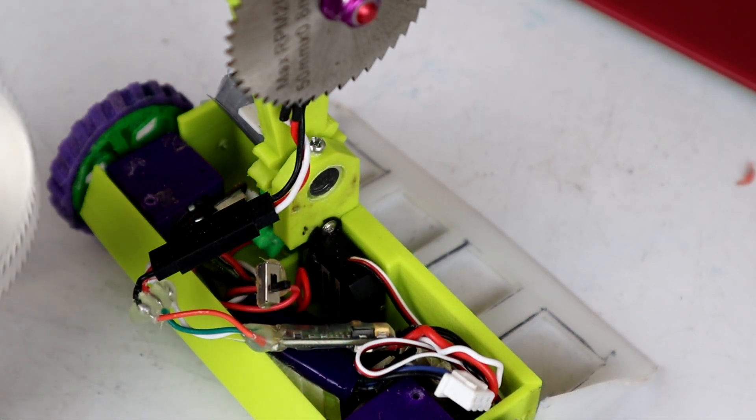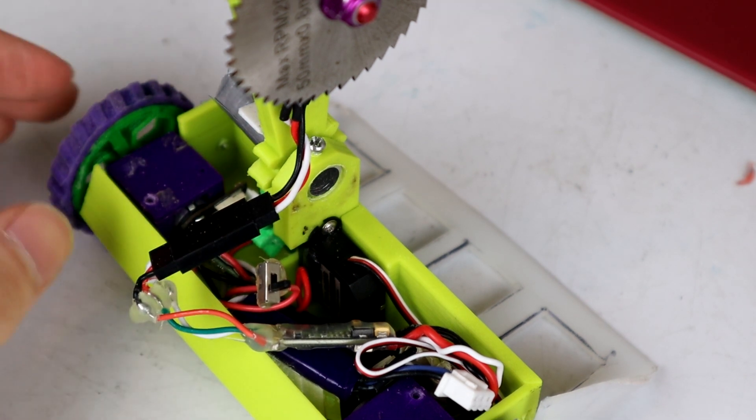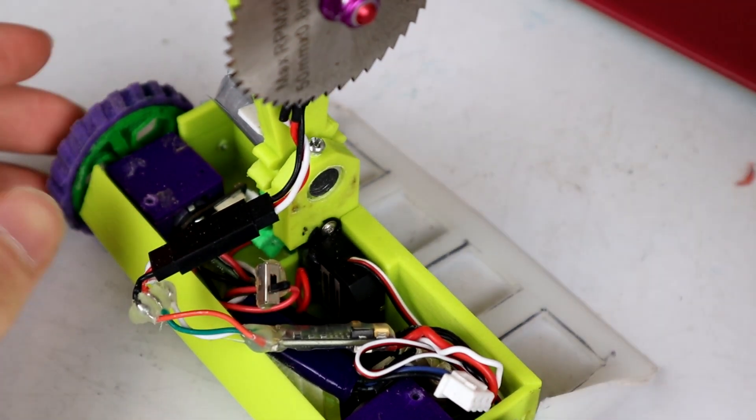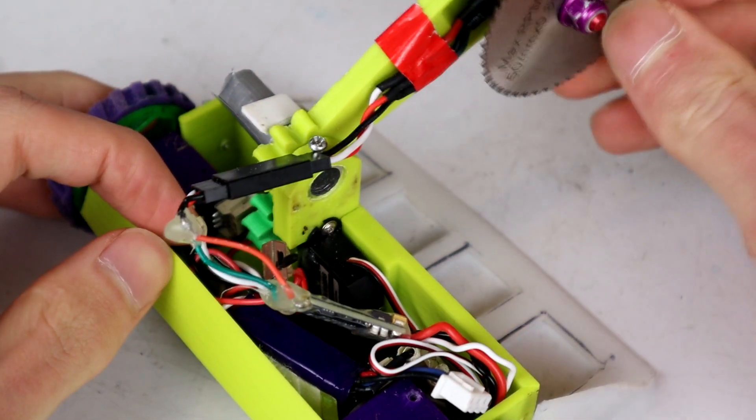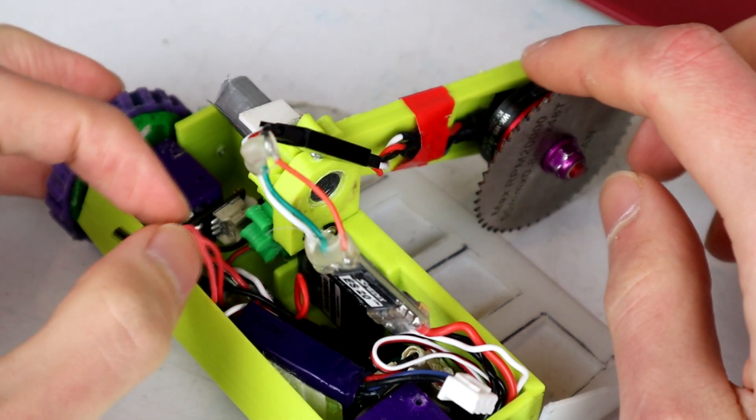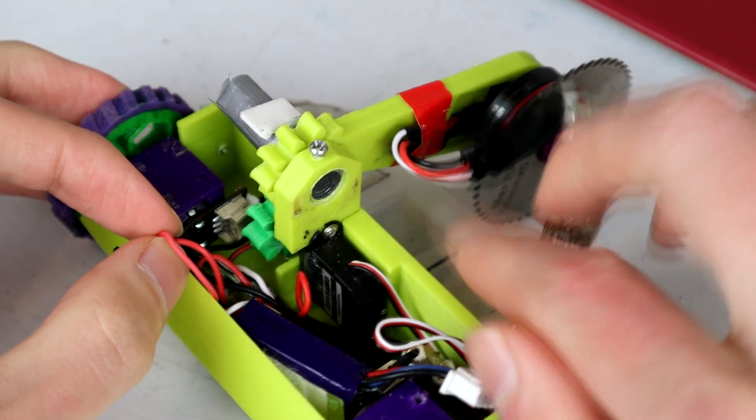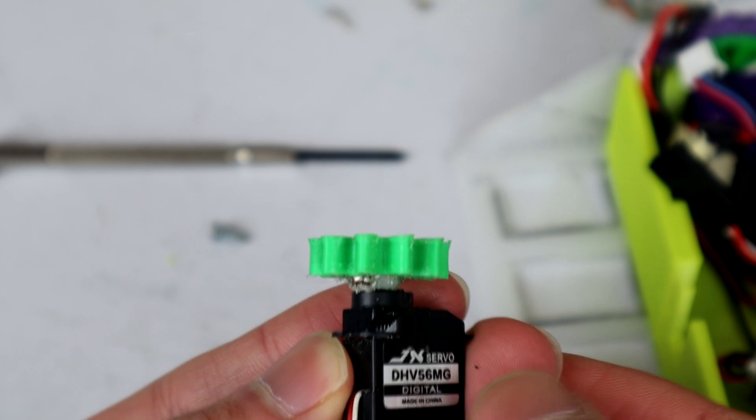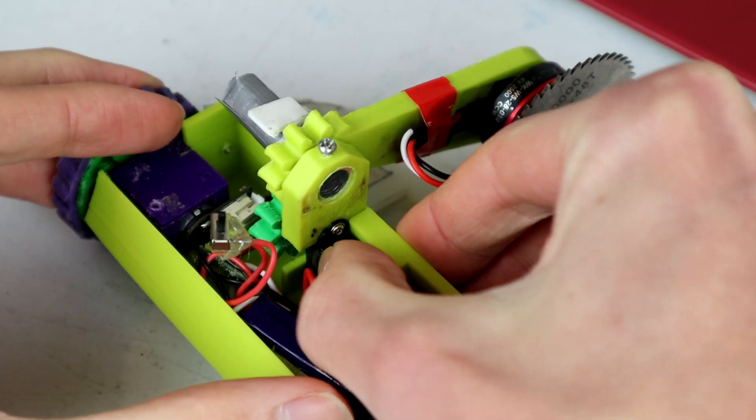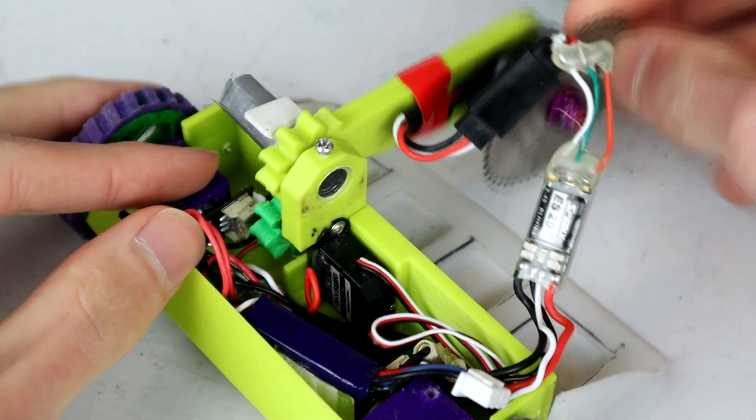So I was supposed to test the next disc or the next saw blade next but we have a bigger problem. We have a crack in the motor, so if I push the saw blade arm down you might be able to see we've got a crack in where the servo mounts so the servo can actually wobble around a little bit now. If I pull this back up again.